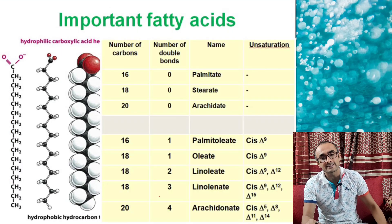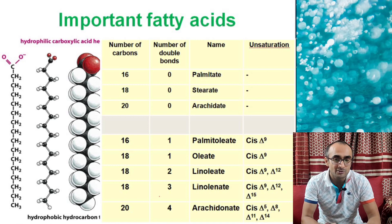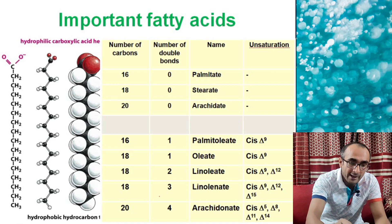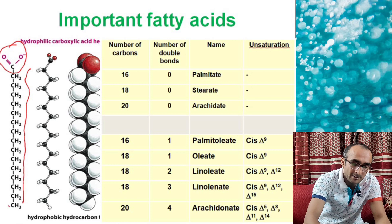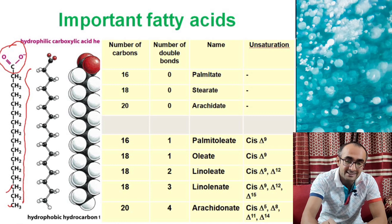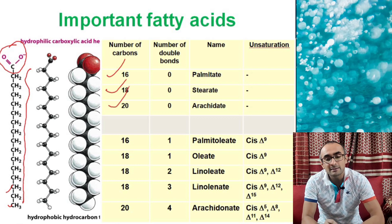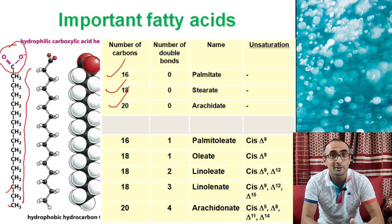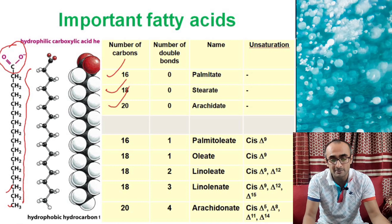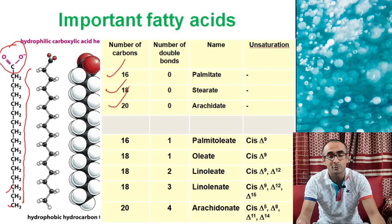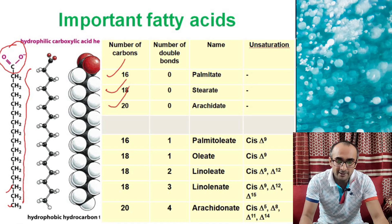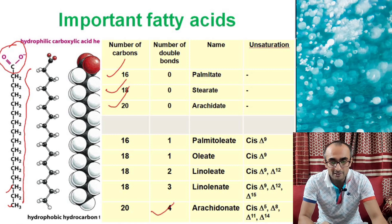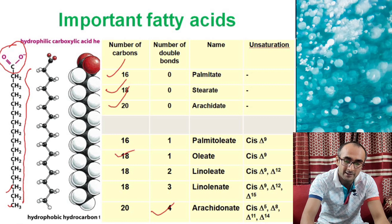Fatty acids have a long hydrocarbon chain with a polar carboxylate head group. Their numbering is based on chain length: palmitate has 16 carbons, stearate has 18, and arachidate has 20 — these are saturated fatty acids. Unsaturated fatty acids have one or more double bonds; those with multiple double bonds are called PUFAs (polyunsaturated fatty acids). For example, arachidonic acid has 20 carbons and four double bonds, while oleate has 18 carbons and a single double bond.